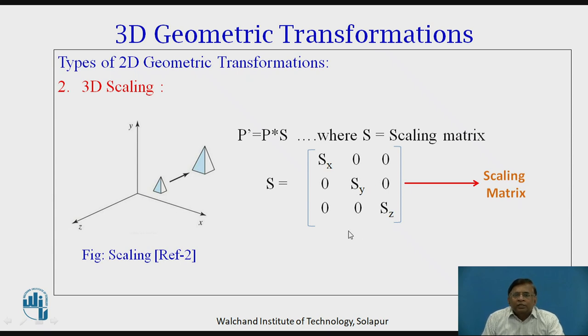Mathematically in matrix form, we can put the relation as given here. P dash is equal to P into S. In case of scaling we multiply two matrices. This P the given point, its matrix we multiply with this scaling matrix. Scaling matrix happens to be with Sx, Sy and Sz as the scaling factors put up along the diagonal of three by three matrix, rest all values are zero. Multiplication of this matrix with the original point will give us new position of the point after scaling.